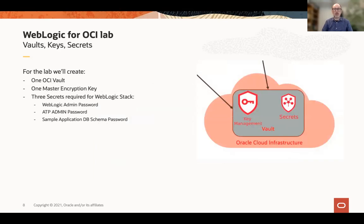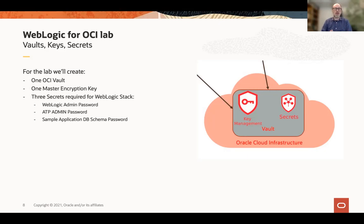Next, we need to do some security setup, where we will actually be encrypting the passwords used along this exercise, so that you don't have to pass them in the clear to the various wizards. For that, we will use the OCI vault. First, we'll create a vault instance; inside that vault, we'll create an encryption key, and then we'll use that key to encrypt three passwords: one for the WebLogic administrator, one for the ATP admin password, and a third for the actual ADF application schema. You can then very easily use those encrypted password references instead of the password itself later in the wizard.